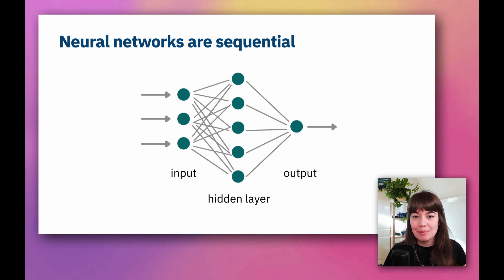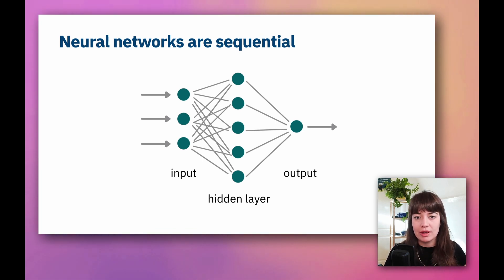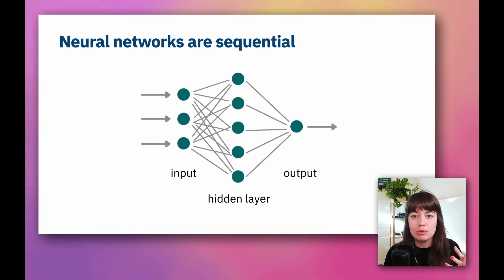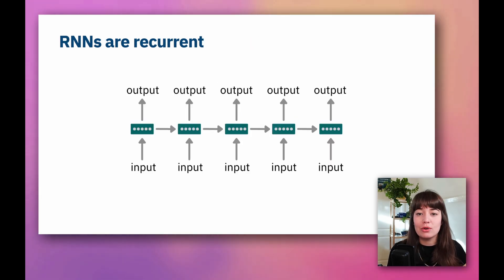A nice thing to do before we start talking about RNNs is to remember how neural networks look like. In a normal neural network, or a deep neural network, we have an input layer, a hidden layer, and an output layer. Information runs sequentially — first the information comes to the input layer, then it is passed to the hidden layer, and then finally the output is produced. You give all of the features of your specific data point at the same time. The difference with recurrent neural networks is that they are recurrent.